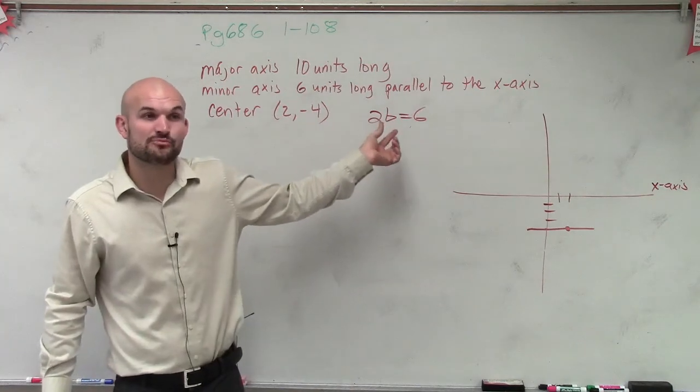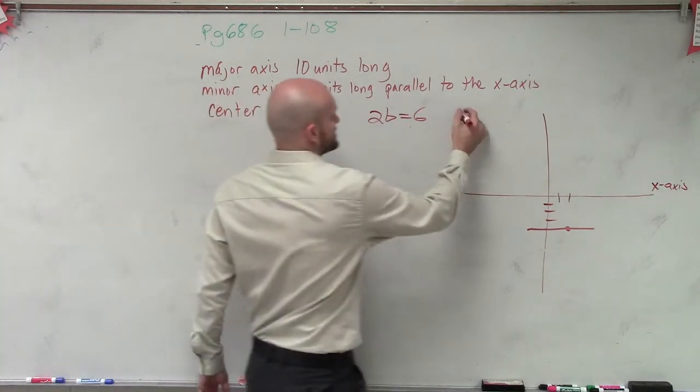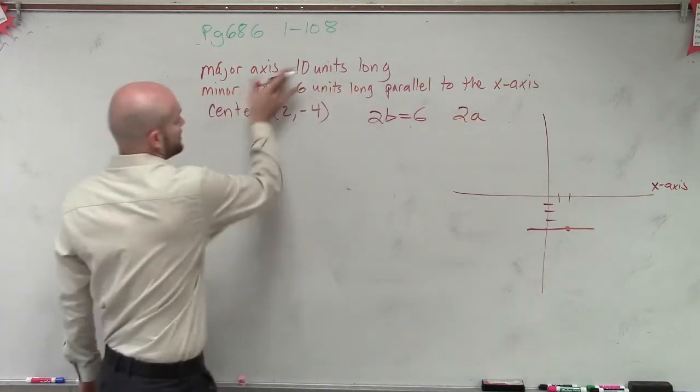The distance of the minor axis is 2b. The distance of the major axis is 2a, which in this case equals 10.